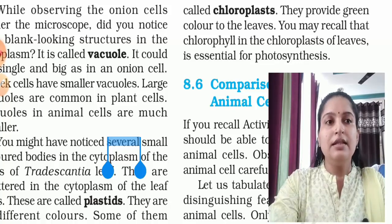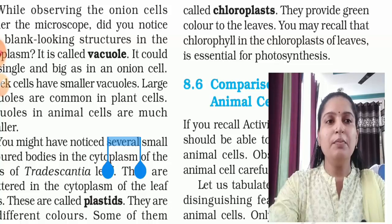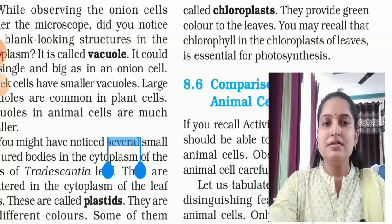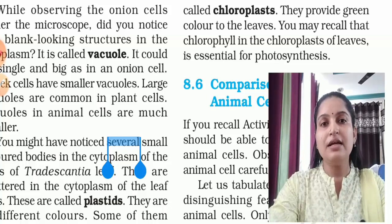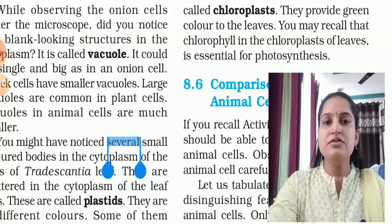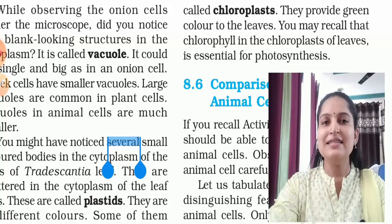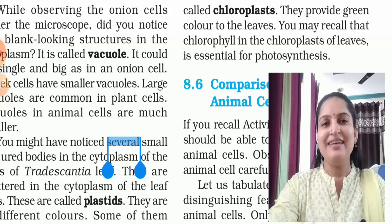Chloroplasts provide green color to the leaves. Chlorophyll in the chloroplasts of leaves is essential for photosynthesis. Chloroplasts are very important for plants because with them, plants trap sunlight and carry out the photosynthesis process. I hope you have understood today's topic. If you have any doubts, please write in the comment section and I will surely reply. Thank you.